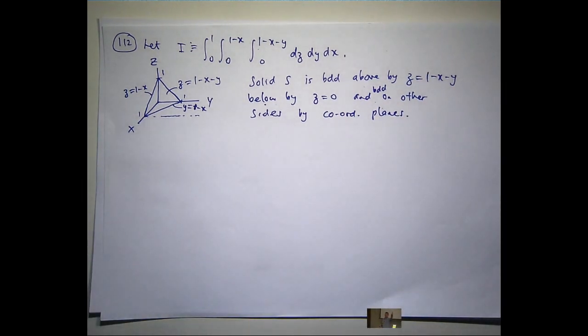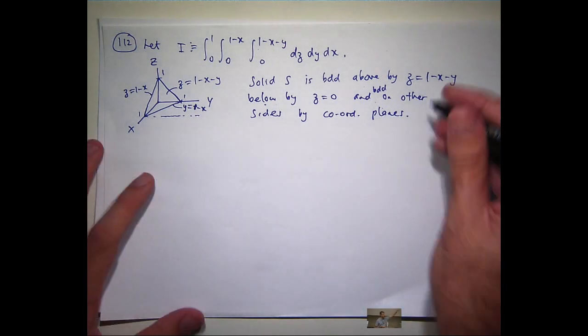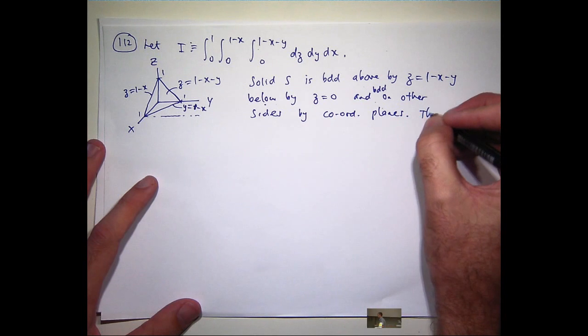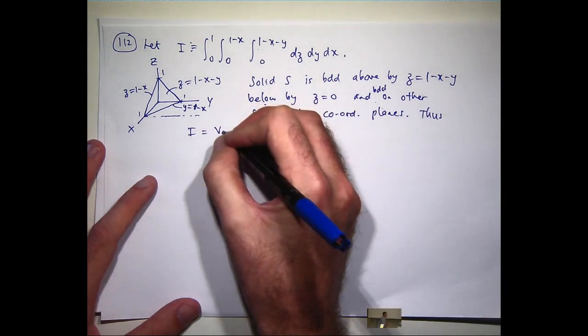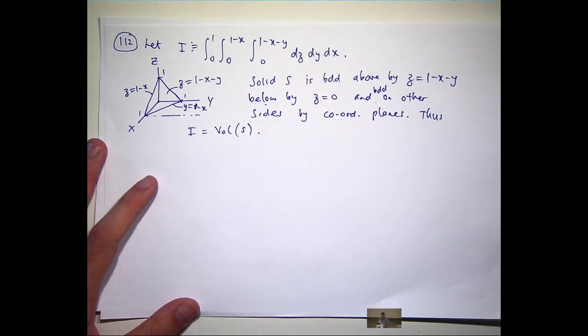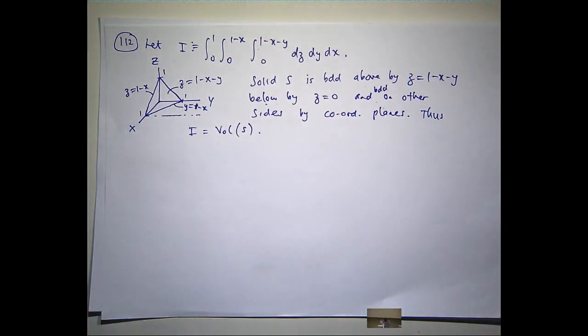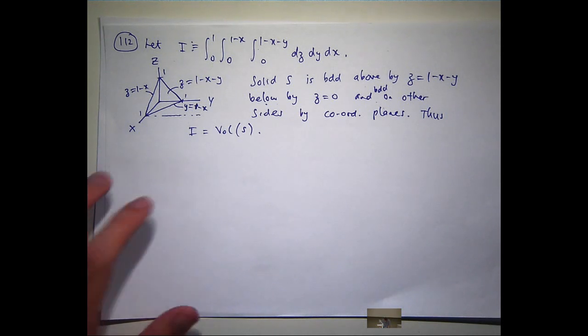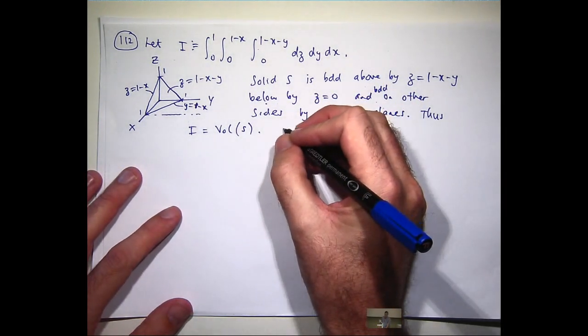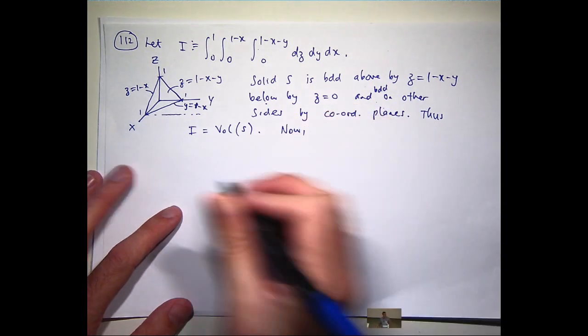So, what is I here? Let's interpret it as a volume. I is just the volume of that tetrahedron. Okay? So, let's actually go through and work out the integral. It's set up nicely for us. We didn't really have to draw a picture. But it is important to get some spatial awareness.